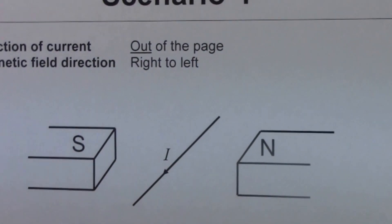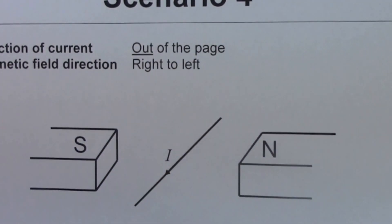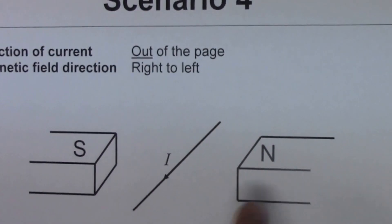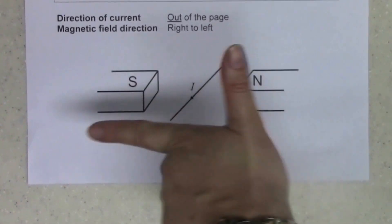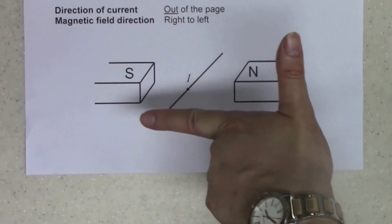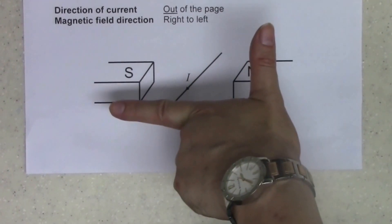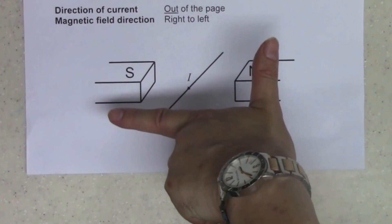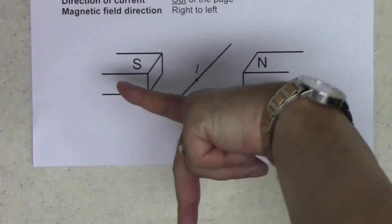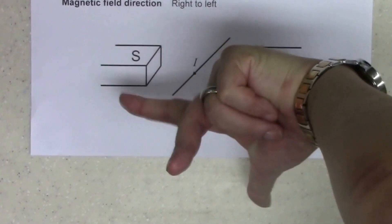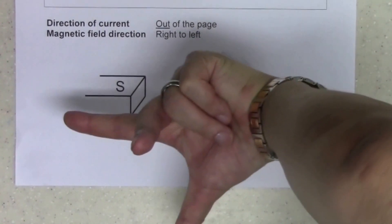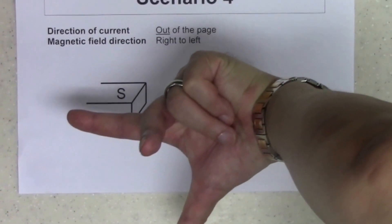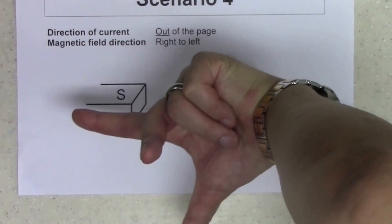In scenario four, the direction of the current is out of the page, and the magnetic field direction is still from the right to the left. Align the index finger from right to left, then align the middle finger to the direction of the current, pointing out of the page. The thumb is pointing downwards, meaning the wire will move downwards. The direction of the force is downward.